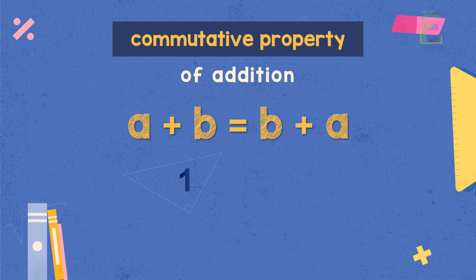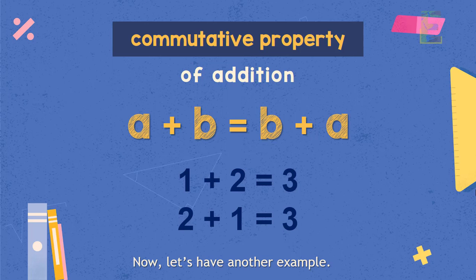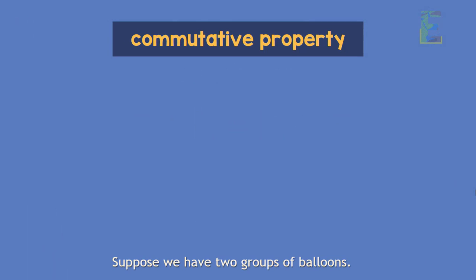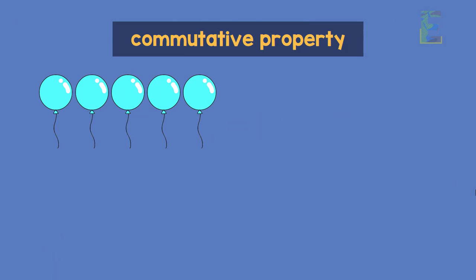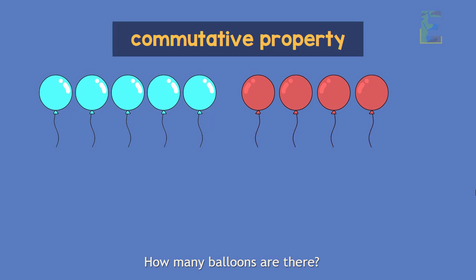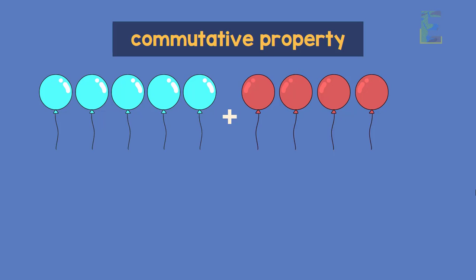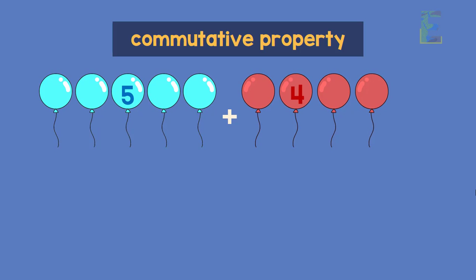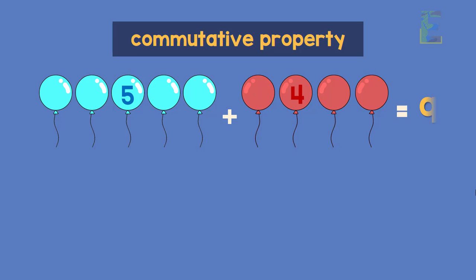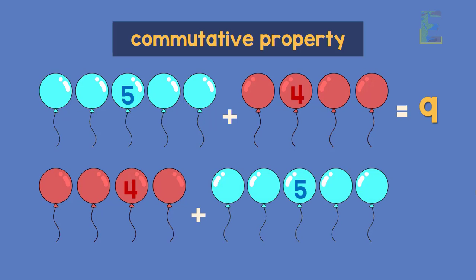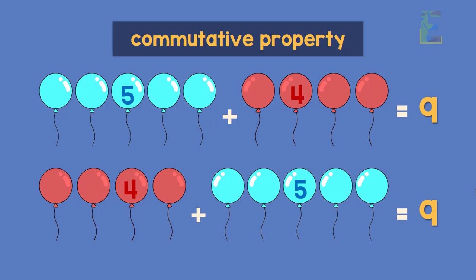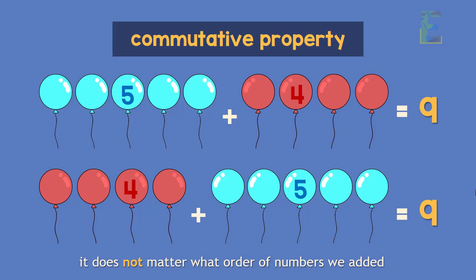For example, adding 1 plus 2 will give us the same answer as adding 2 plus 1. Let's have another example. Suppose we have two groups of balloons — 5 blue balloons and 4 red balloons. How many balloons are there? We can add the 5 blue balloons to the 4 red balloons, which results in 9 balloons. Or we can add the 4 red balloons to the 5 blue balloons, and the result is also 9 balloons. It doesn't matter what order the numbers are added.